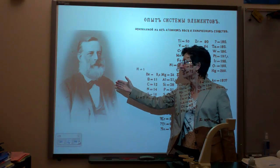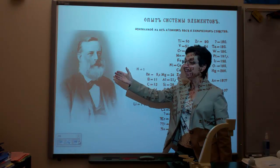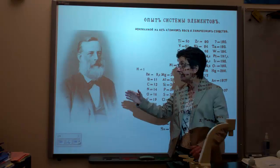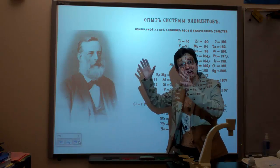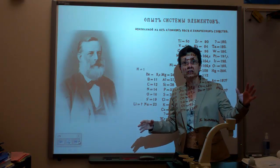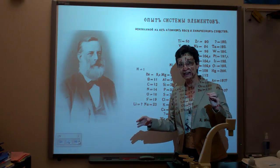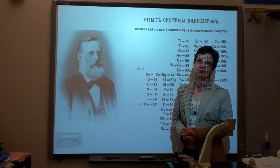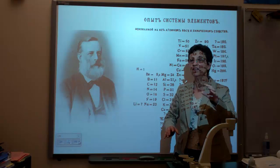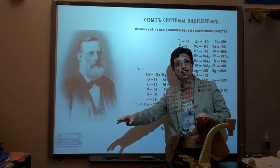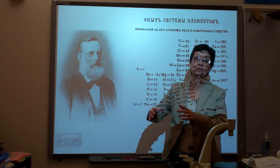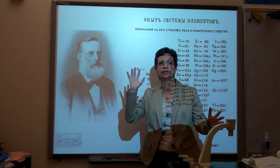Dmitri Mendeleev — he is so excited because back in 1869, he actually came up with a system to organize the elements. Because before that, it was a mess. A bunch of scientists, one scientist did one thing, another scientist did another thing with organizing the elements that were known at the time. And guess what? Everybody was confused, just totally confused.